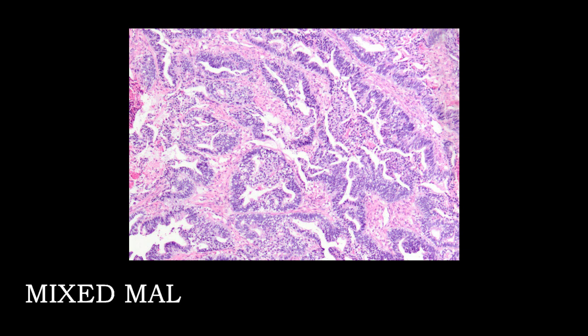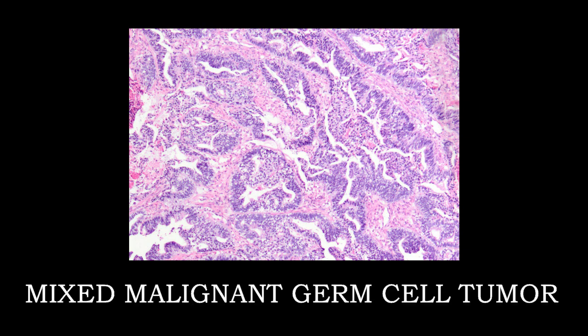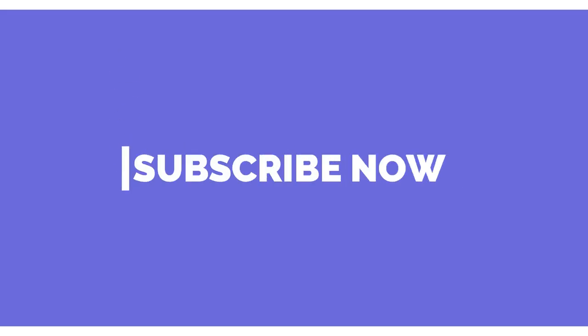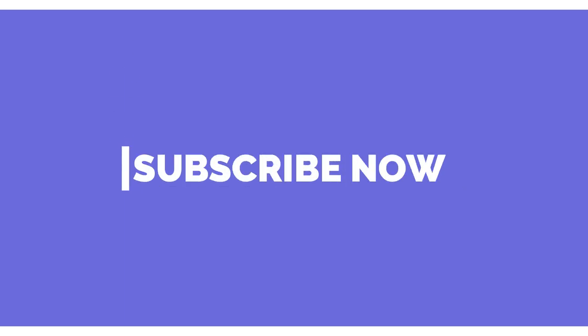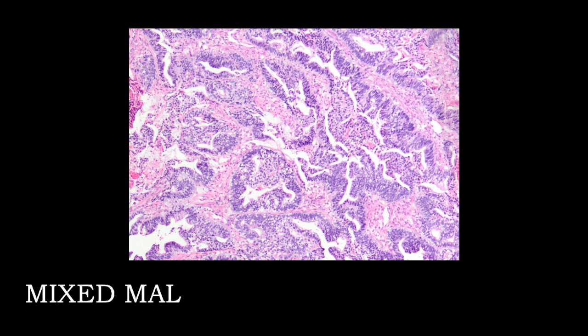A few words about mixed malignant germ cell tumors — a mixture of two or more germ cell tumors with their distinct morphologies. When the sample is submitted for histopathological examination, multiple sections should be taken, particularly the surrounding areas which are viable around hemorrhages and necrosis. This will help determine the extent of various germ cell components present in the tumor.